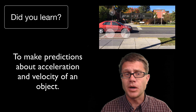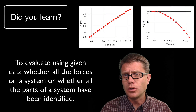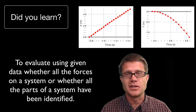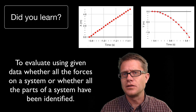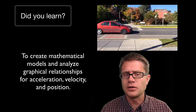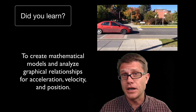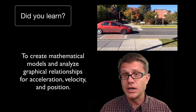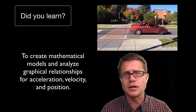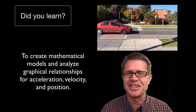Did you learn to make predictions about acceleration and velocity of an object? Could you look at data and figure out if an object has a velocity, and if so, is it a changing velocity — is it accelerating over time? And finally, could you use mathematical models or analyze graphical relationships to figure out the position, the velocity and the acceleration? I used video analysis. In a physics lab you could use a ticker tape or a motion sensor to do it. I hope that made sense and I hope that was helpful.